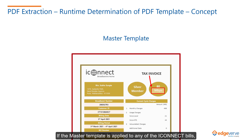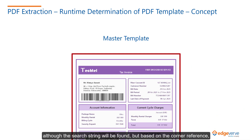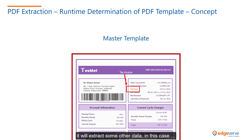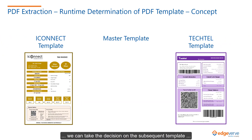If the master template is applied to any of the iConnect bills, the text extraction of the word mbps will always be successful. If the same master template is applied to any of the Tectel bills, although the search string will be found, but based on the corner reference, it will extract some other data — in this case, it will possibly extract text as bill date. So with the help of extracted data from the master template, we can take the decision on the subsequent template which has to be applied.